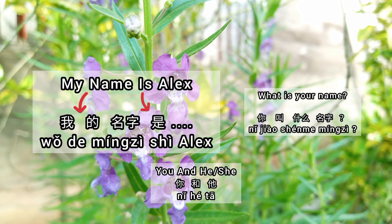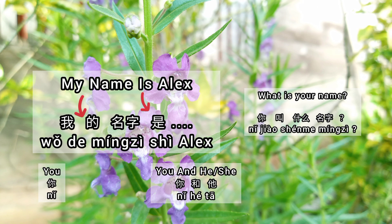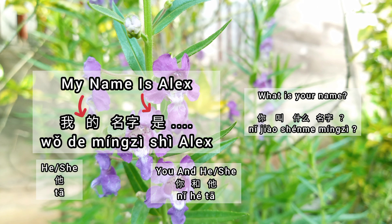你和他 — you and him. So what about 'your name is' and 'his name is'? It is very easy. 你的名字是 means 'your name is.' 他的名字是 means 'his name is.'